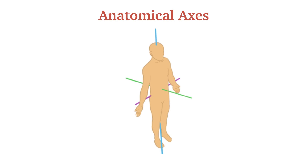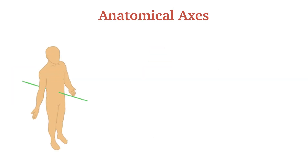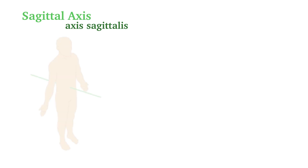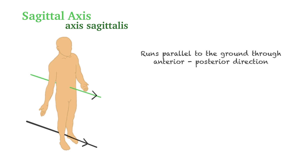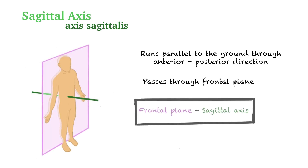Anatomical axes. We have completed the cardinal planes — movement occurs on planes. Axes are defined as imaginary lines around which motion occurs, and as discussed, axes are considered on joints. There are three main imaginary axes: the sagittal axis, the transverse axis, and the vertical axis. The sagittal axis is also known as axis sagittalis in Latin. Imagine an arrow passing through your forehead, but since it's an axis, it will be a line-shaped arrow. The sagittal axis is an imaginary line running parallel to the ground from front (anterior) to back (posterior) of the body, and this axis passes through the frontal plane. Keep in mind: frontal plane and sagittal axis go together.